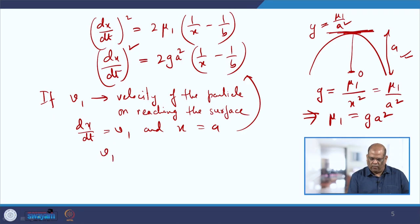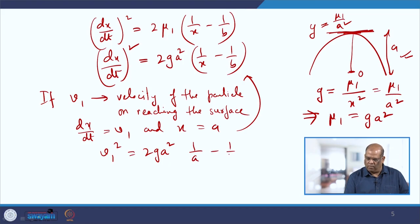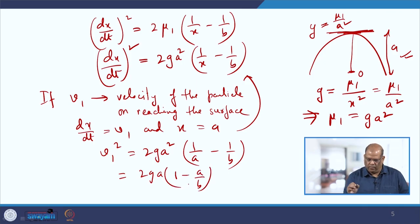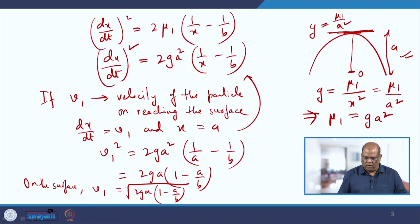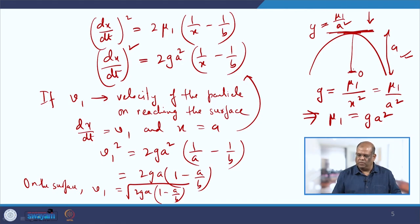Simplifying: v₁² = 2ga(1 - a/b). So the velocity on the surface is v₁ = √(2ga(1 - a/b)). Though a positive sign is written, since the particle is falling and x decreases with time, the velocity should actually be taken as a negative quantity.